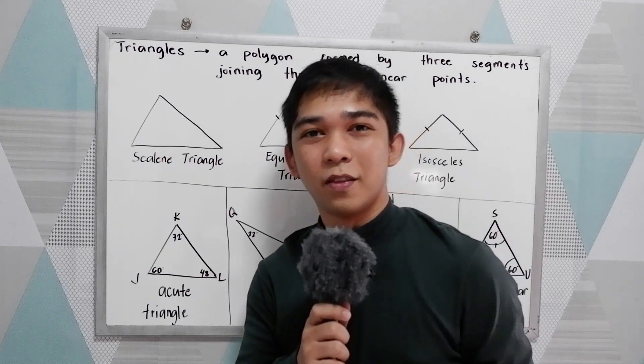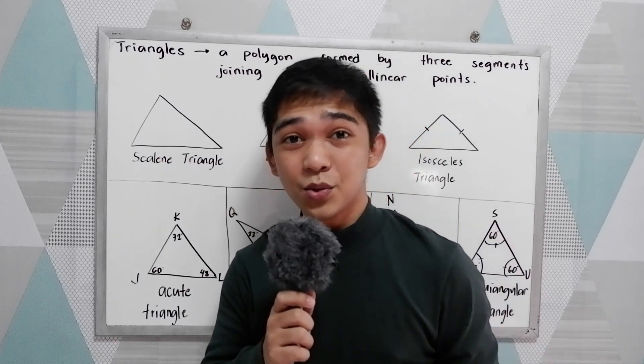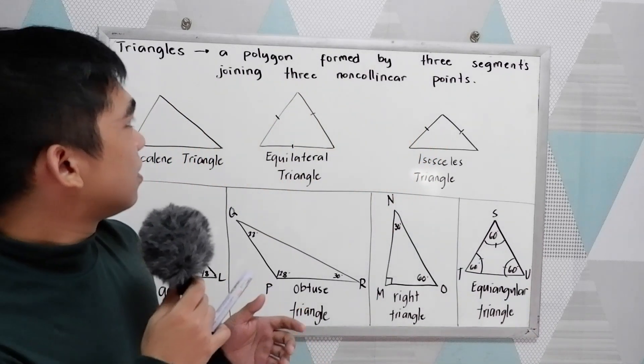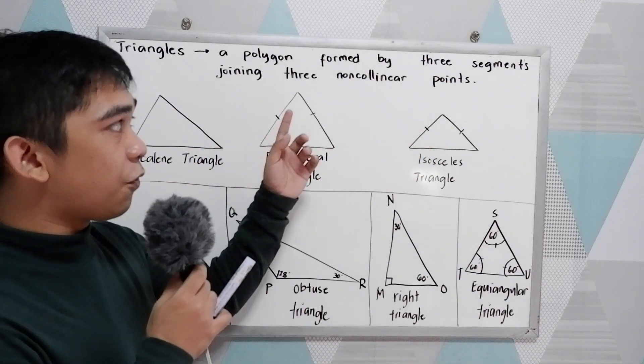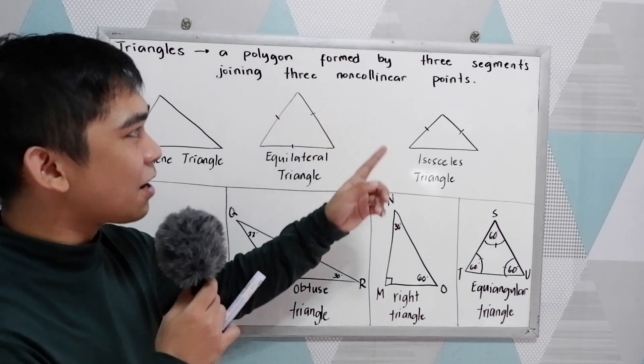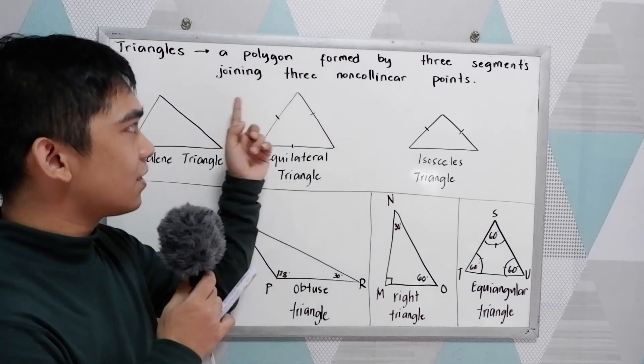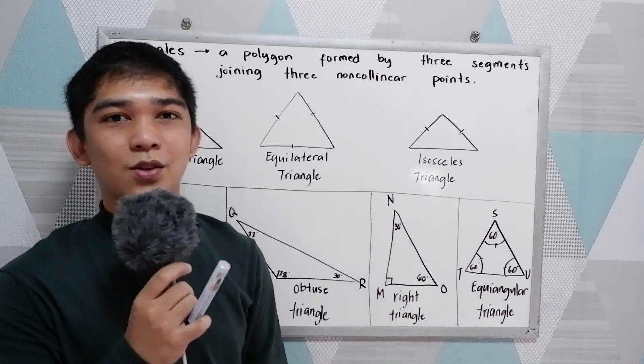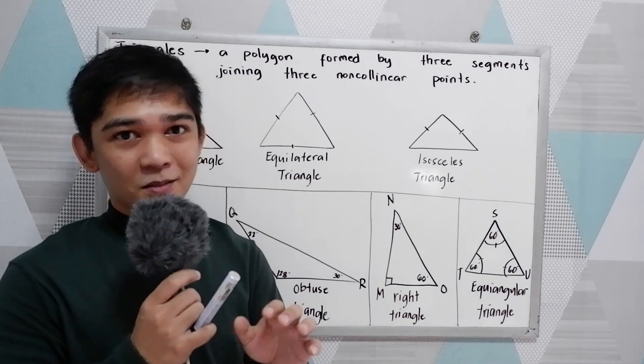Good day everyone. Today I'm going to discuss triangles. Triangles are polygons formed by three segments joining three non-collinear points, so a three-sided polygon.